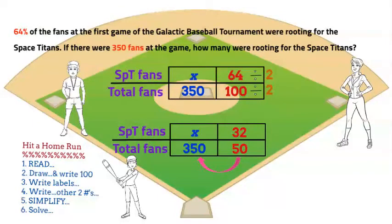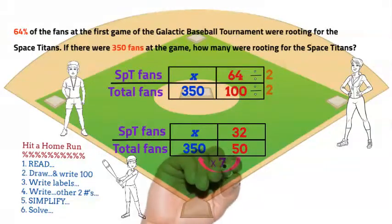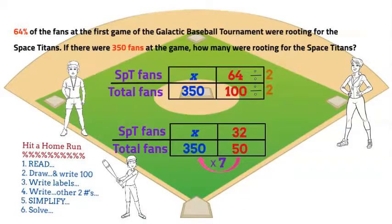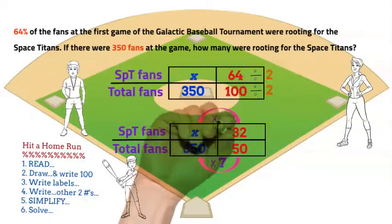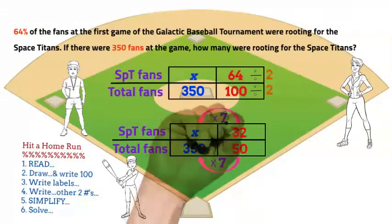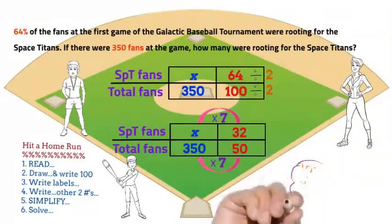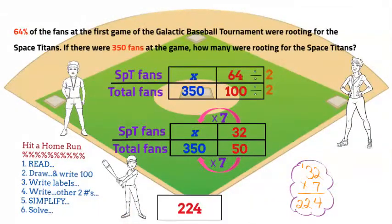Now think: 50 times what is 350? That's right, it's 7. Do the same thing to the numerator and you'll have your answer. There were 224 fans at the game rooting for the Space Titans. You just hit a home run.